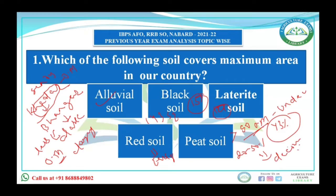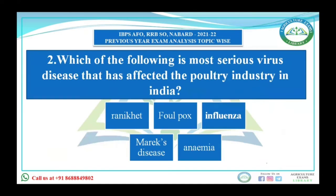The next question is: which of the following is the most serious viral disease that has affected the poultry industry? Options are Ranikhet, fowl pox, influenza, Marek's disease, and anemia. The answer is Ranikhet disease. It is an acute, highly contagious viral disease of poultry, and all age groups of poultry birds are affected.